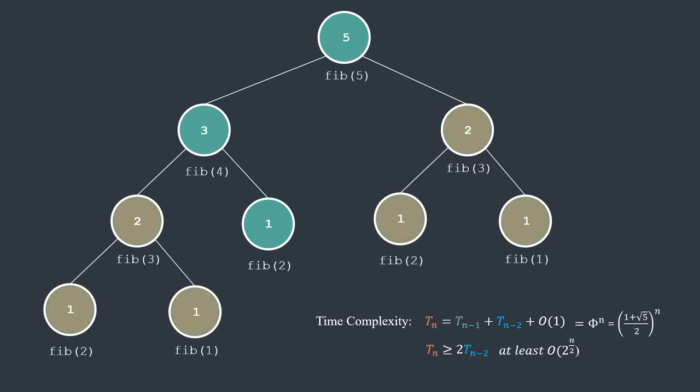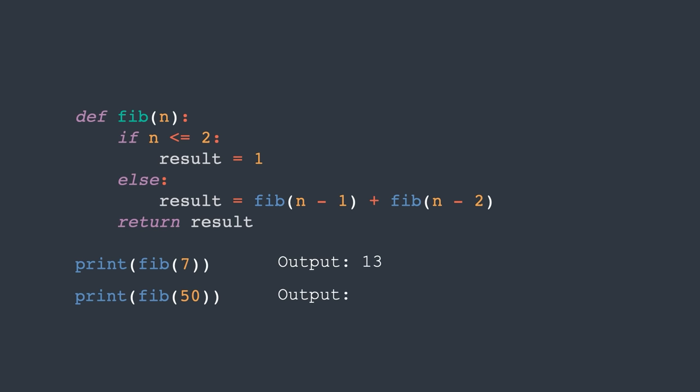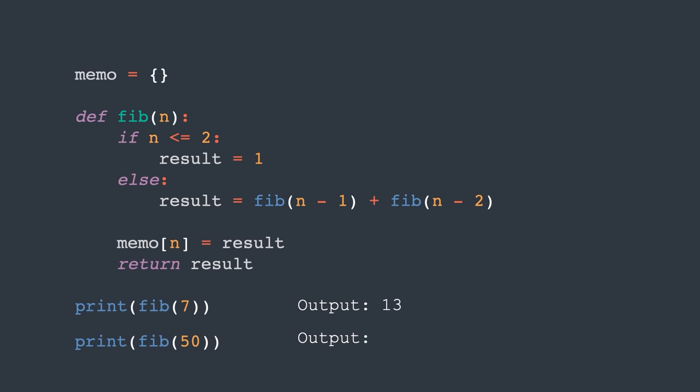Notice that we are doing the same computations multiple times. For example, we have already computed fib of 3, but we are repeating the computation later. We should only do it once. There is a general approach to improve algorithms like this one, and this approach is called memoization, which means remember in Latin. Let's go back to our implementation. The idea is to remember the computation of each Fibonacci number and compute it at most once. We can do this by storing the computed value in the dictionary. Let's call it memo. Memo is initially empty.